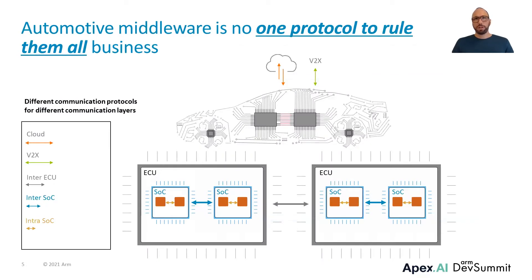Automotive communication has different layers with different properties. Intra-SoC is the communication between software parts within an SoC. Inter-SoC is the communication between SoCs that are on the same ECU. Inter-ECU is the communication between the ECUs in a vehicle. The vehicle can communicate with the cloud backend of the OEM or the fleet operator, or with other vehicles and the infrastructure, which is summarized as V2X. Intra-SoC is an in-memory communication. Between SoCs and ECUs there is typically a wired connection, and wireless communication connects vehicles to infrastructure or cloud backend.